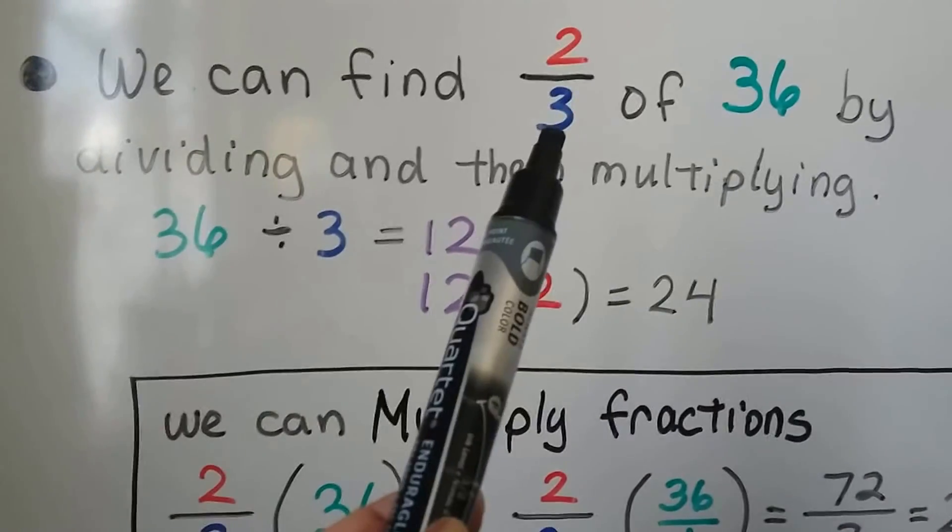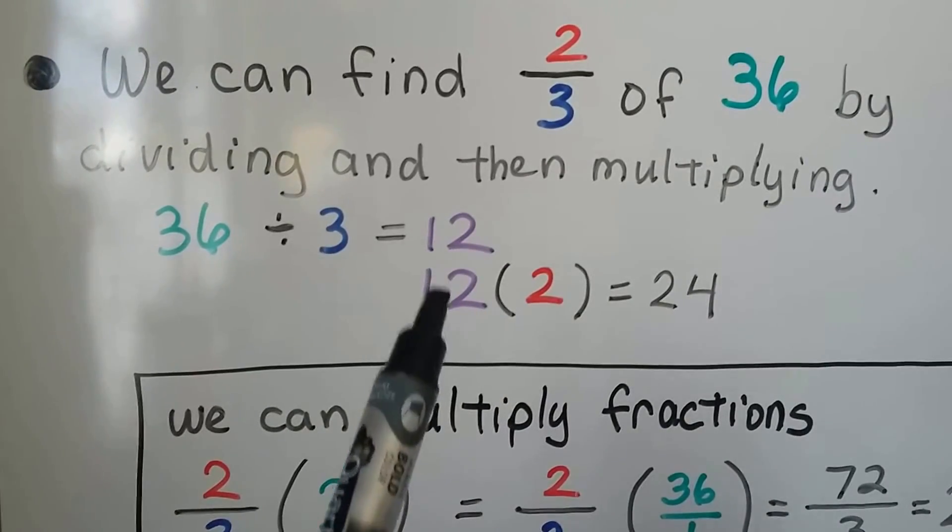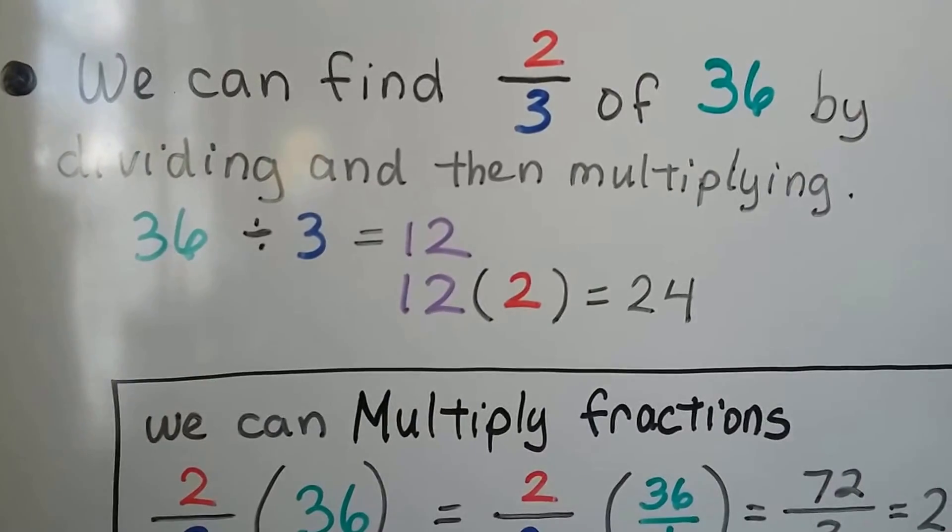We divide the 36 by the 3 denominator and get 12, and then we multiply that 12 by the 2 numerator and we get 24.